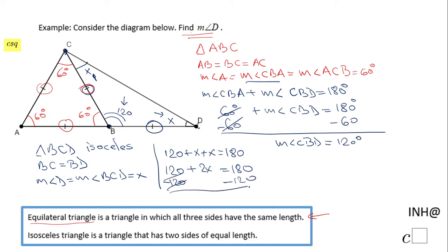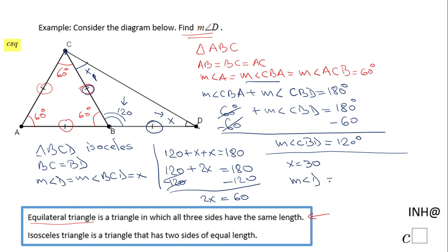So two X equals 60, and dividing by two gives X equals 30. Don't forget — X is nothing other than the measure of angle D. So the measure of angle D is 30 degrees.